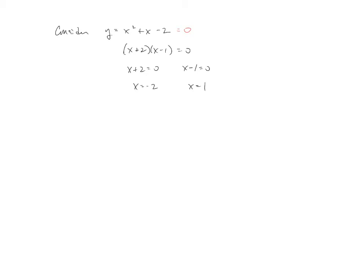So what this really has just told us is that every zero comes from a factor. So x equals negative 2 came from a factor x minus 1.